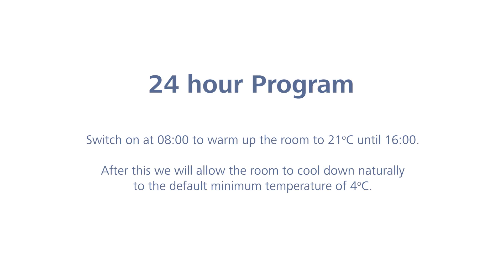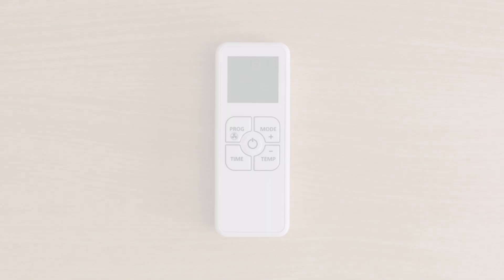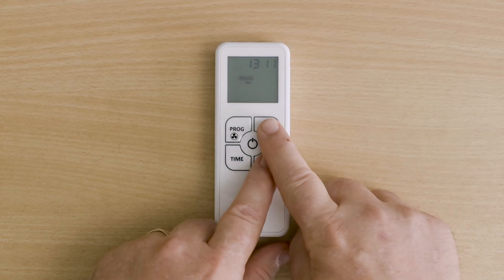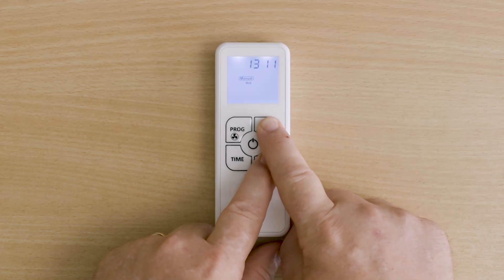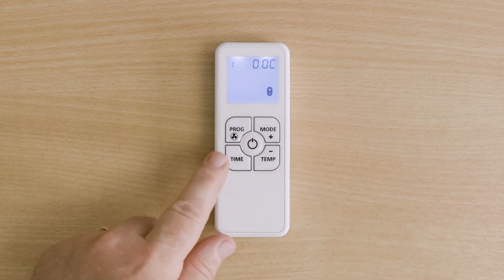In this scenario we are going to program the heater, as in the manual, to switch on at 0800 and warm up the room to 21 degrees until 1600. After this we will allow the room to cool down naturally to the default minimum temperature of four degrees. First, go to the setup menu option B and set the programming mode to 24 hours.